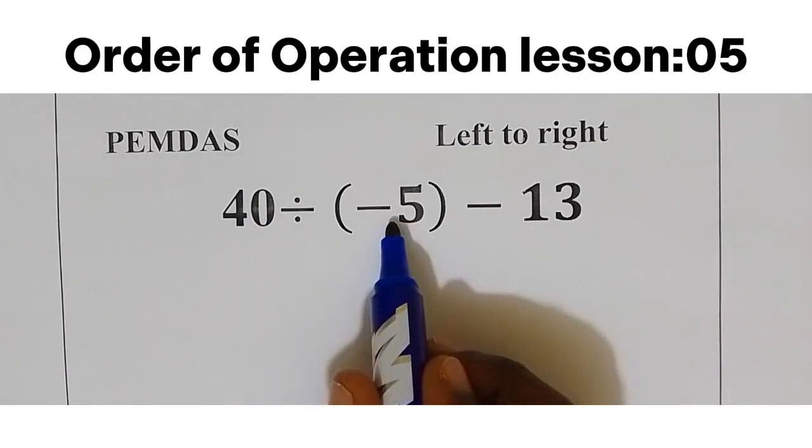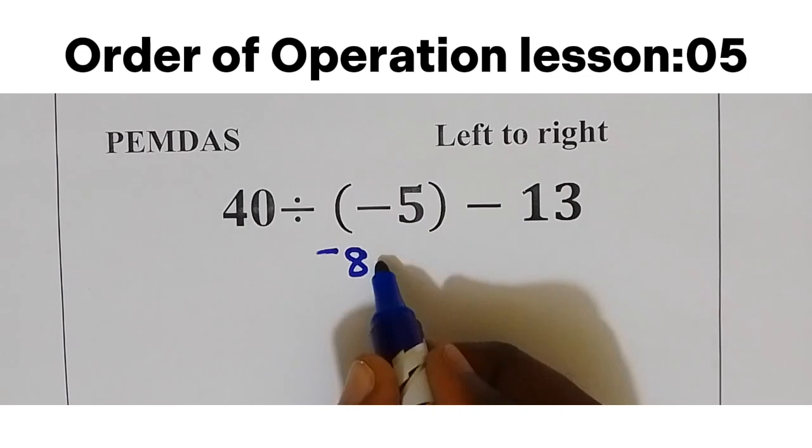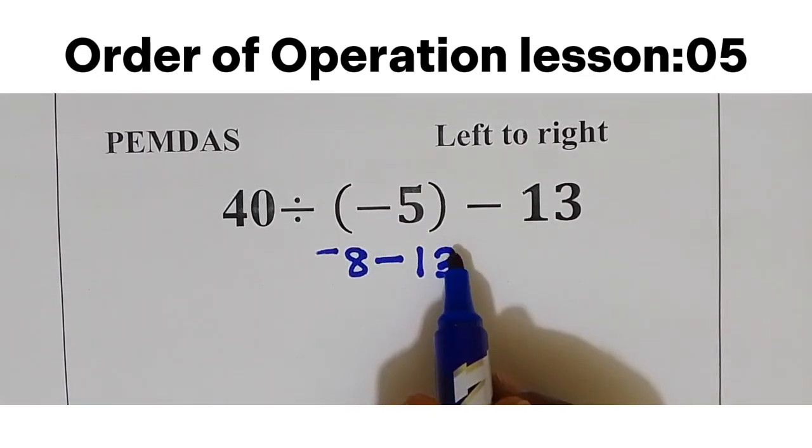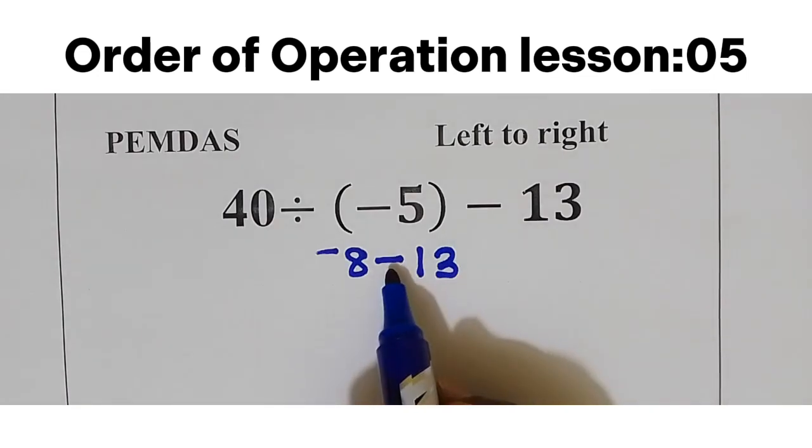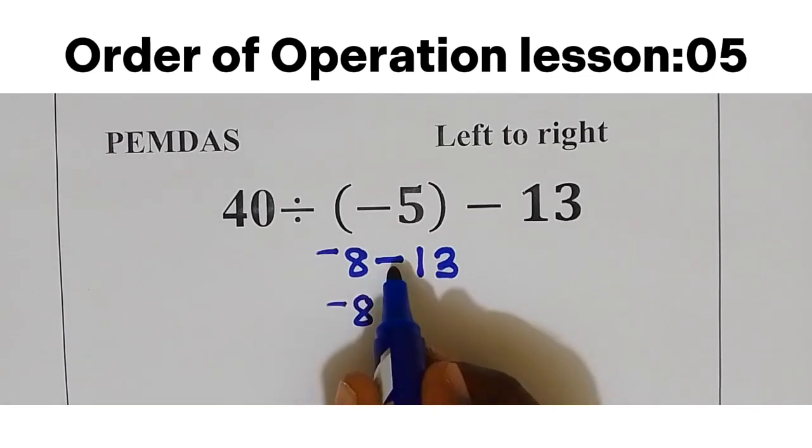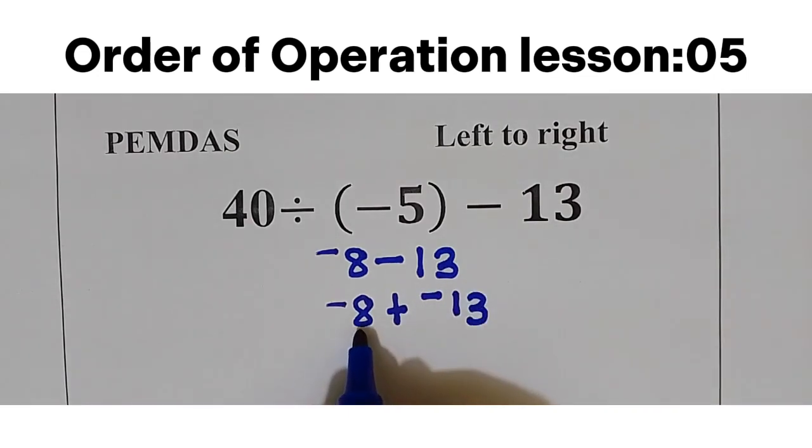40 divide by minus 5, we get minus 8, then take away 13. Since we fall on integers here, I'm going to change this sign into addition and then I reverse it to be negative on top. Minus 8, I'll change this into addition, so plus minus 13. Now negative 8 plus negative 13 will get answer equal to negative 21.